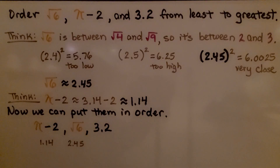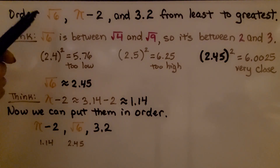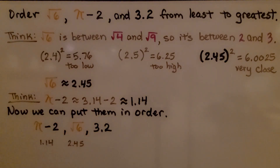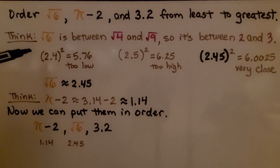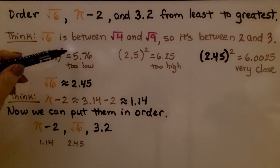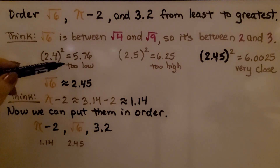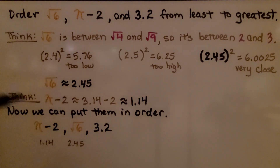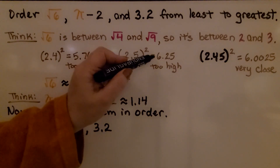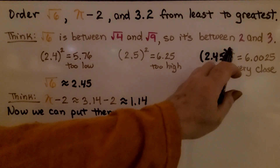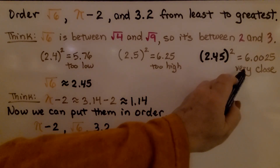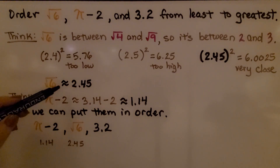Here it's telling us to order the square root of 6, pi minus 2, and 3 and 2 tenths from least to greatest. The square root of 6 is between the square root of 4 and the square root of 9, so it's between 2 and 3 — we can say it's about 2 and 4 tenths. If we square 2.4 we get 5.76, which is too low. We try 2.5 squared and get 6.25, which is too high. If we do 2.45 squared, that gives us 6.0025, which is very close to 6. So the square root of 6 is approximately 2.45.